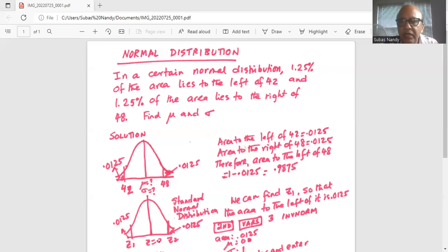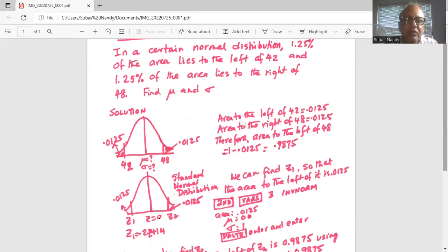Now we convert this information to a standard normal curve where the mean is located at the peak, the highest Z. The standard normal variable is 0.0. To the left of Z1 area is 0.0125.